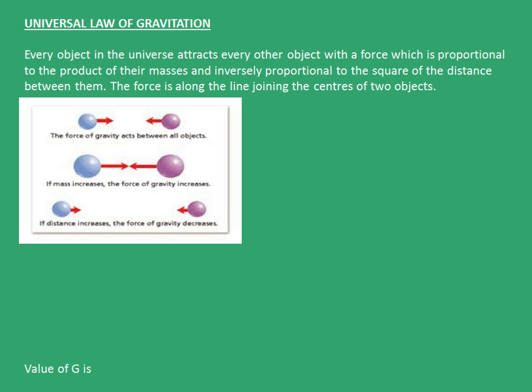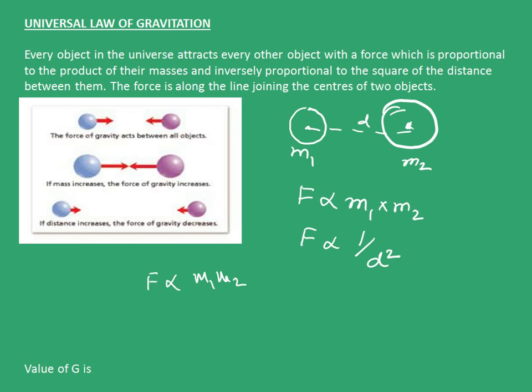The force is along the line joining the centers of the two objects. So, if we say that this is object 1 and this is my object 2. This is the center of object 2, this is center of object 1, and this is distance d. Mass is m1, mass is m2. So, force is directly proportional to m1 into m2. At the same time, this force is inversely proportional to 1 upon d square. Now, if we combine both of this, we get F is proportional to m1 m2 upon d square. Now, to remove this proportionality sign, we introduce a constant which is called universal gravitational constant G, so F = G m1 m2 upon d square.